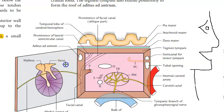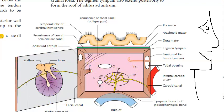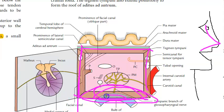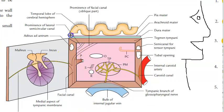This is the lateral wall — opening to the outside. Inside whatever you're seeing is the medial wall. This will be the posterior wall, this will be the anterior wall, this will be the roof, and this will be the floor. This is the middle ear.